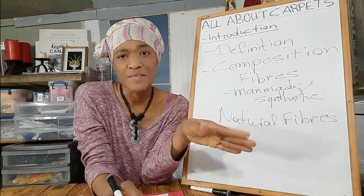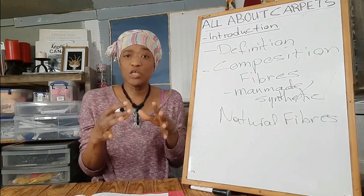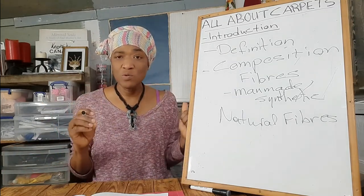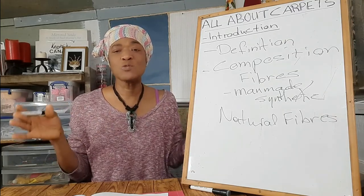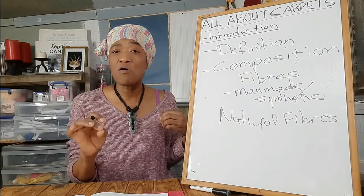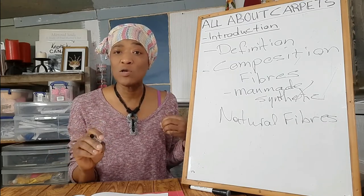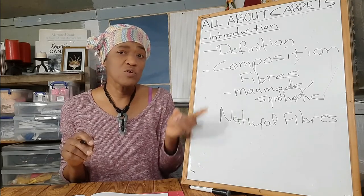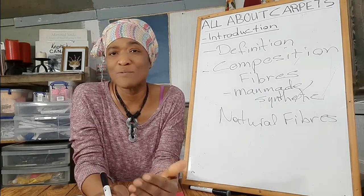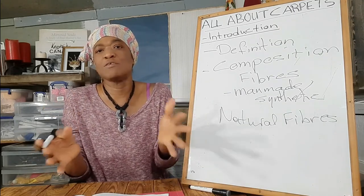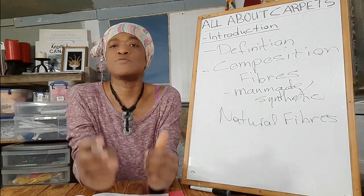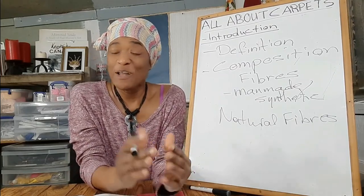Usually carpet is sold either as broadloom carpet or as an area carpet. Broadloom carpet is what we call wall-to-wall carpet, and that has to be installed, so it's more expensive to buy. You could also use area carpet. If you go into the big box stores — and by big box stores I mean the big wholesalers and retailers that sell home goods, lumber, and that sort of thing — you'll sometimes find area carpets available.